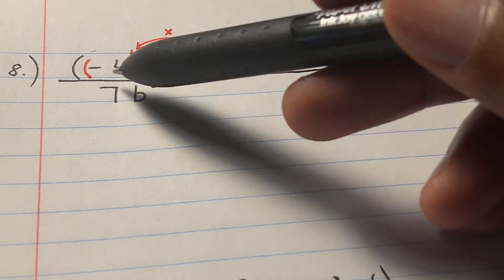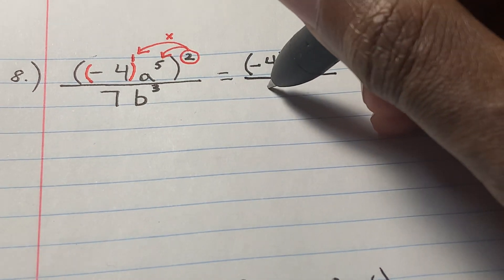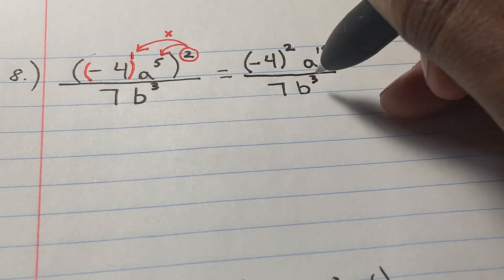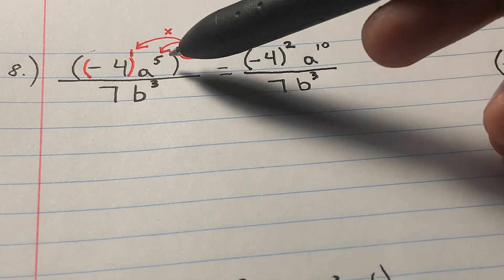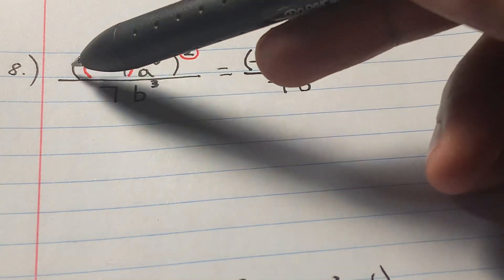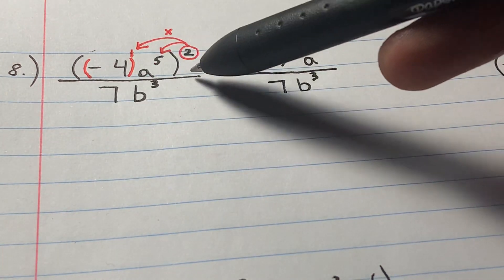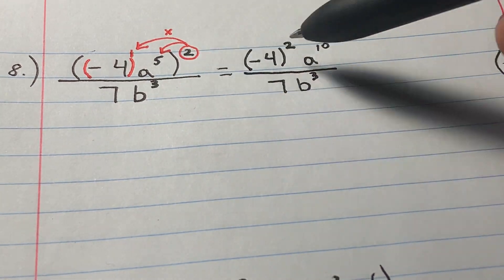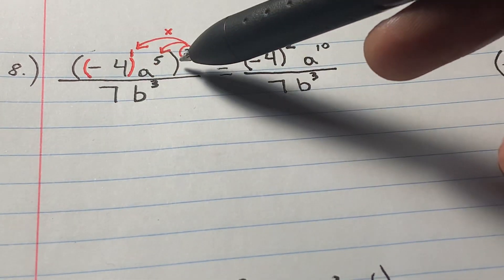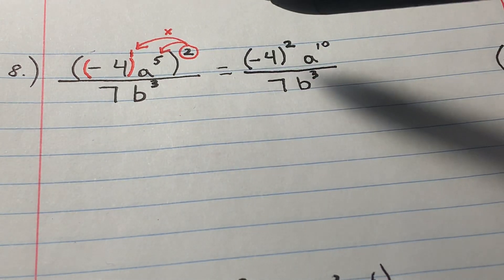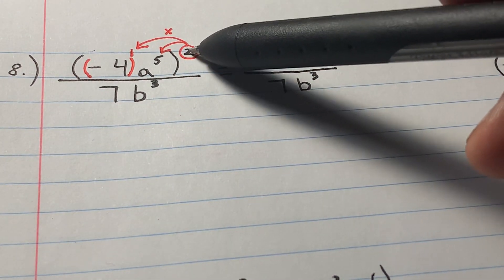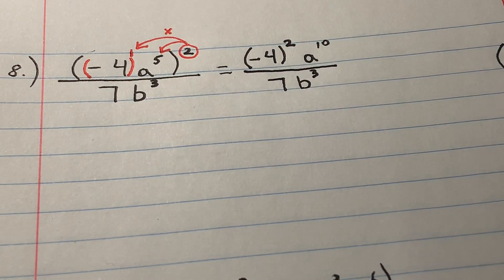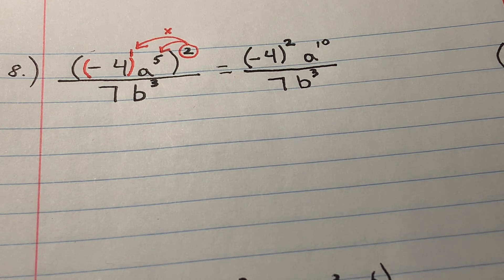Let's keep the fraction bar and the bottom stays the same, because the parentheses are not around the entire fraction — they're just around the numerator. So I do not distribute the exponent to the bottom, just the top, and I keep the bottom the same.